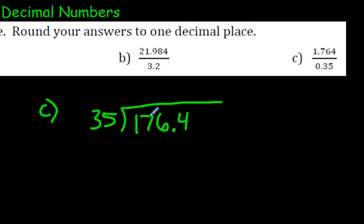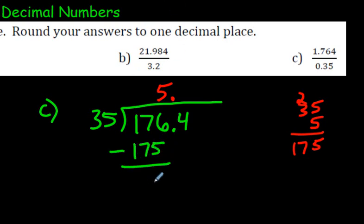Let's do it. 35 cannot go into 17. So 35 into 176. We have to make some guesses here again. Let's try, I'm just going to guess, 3, 4, 5. Let's try a 5. 25, 15, 17. Oh my goodness. Look at that. That was a good guess. I get lucky sometimes. Don't forget the decimal right above the other decimal, just like we did before.